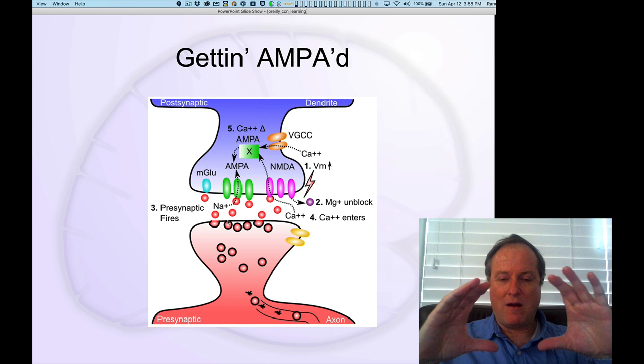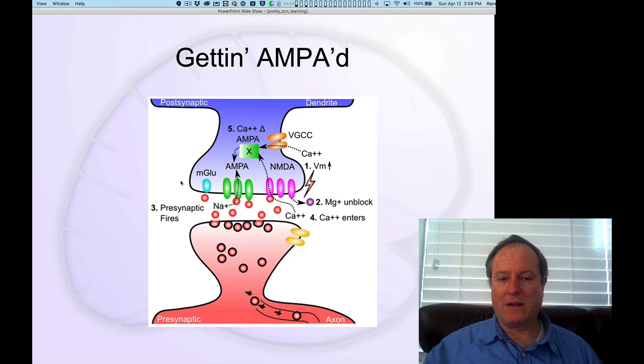Conductance is literally just the size of that pipe, the number of open pipes essentially, that allow those sodium ions to get through. That is going to increase GE, the conductance across the membrane, allowing these sodium ions in. The events that unfold that result in the increase in number of AMPA receptors are as follows.